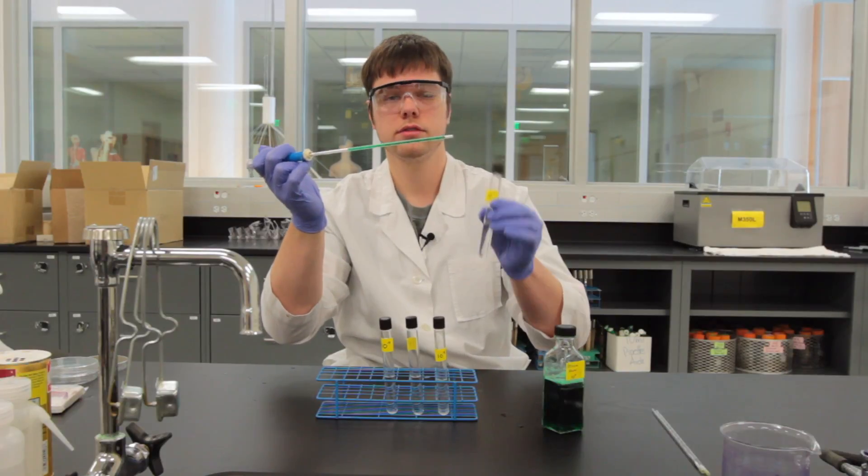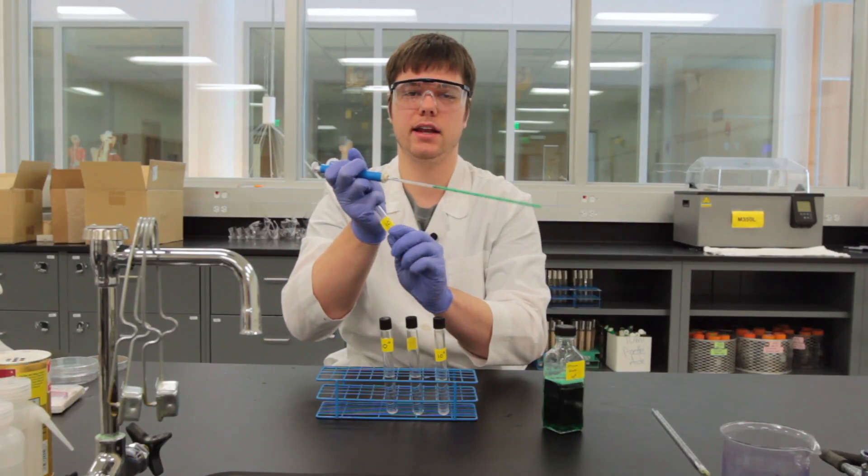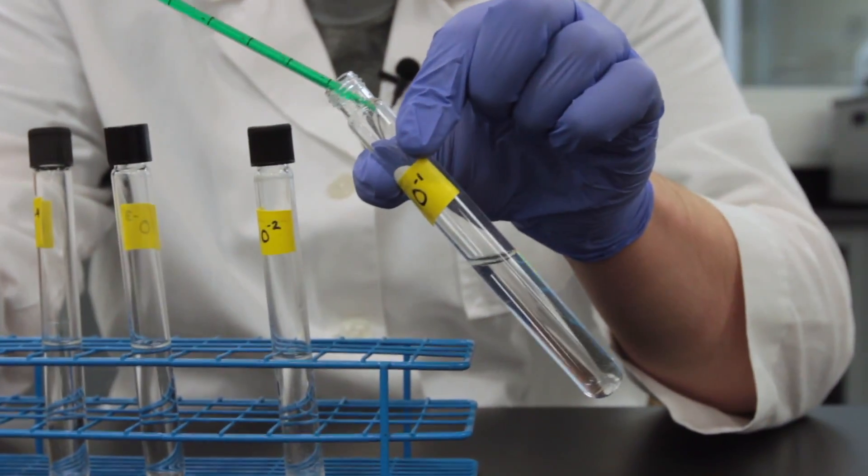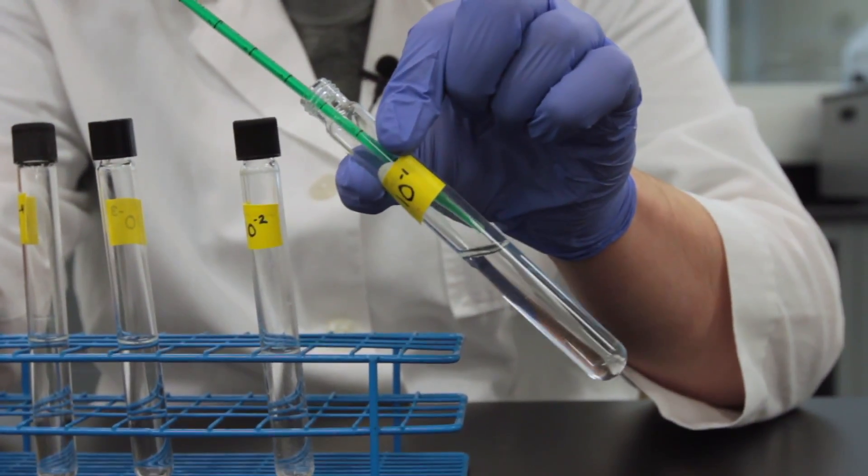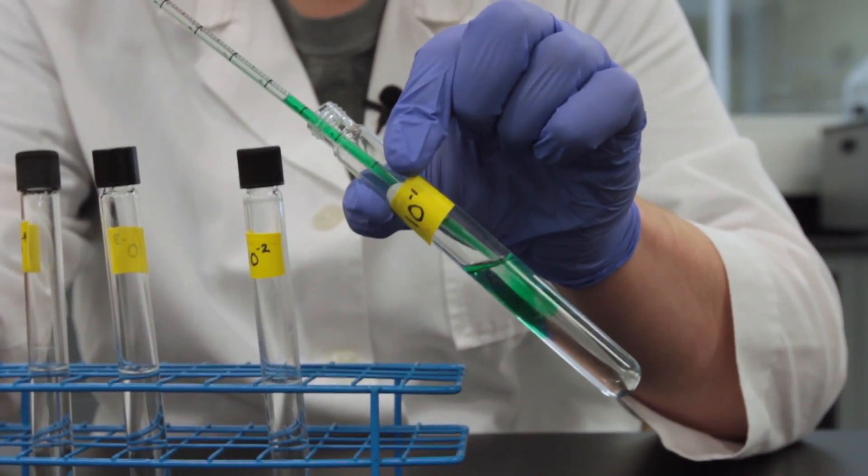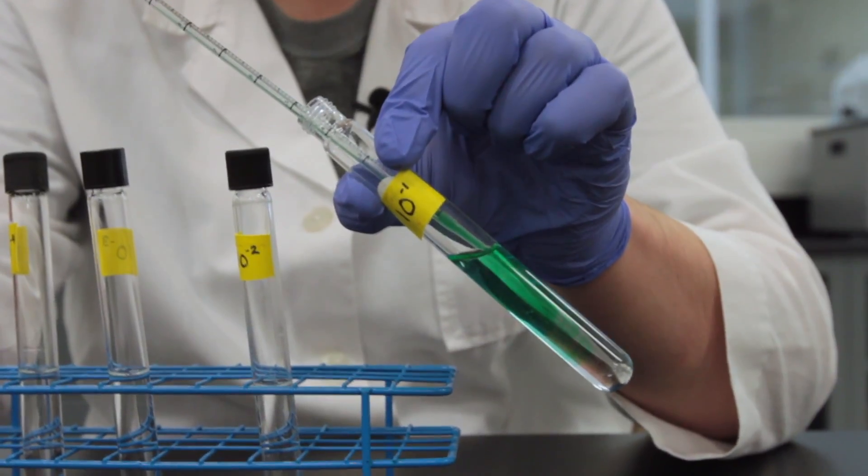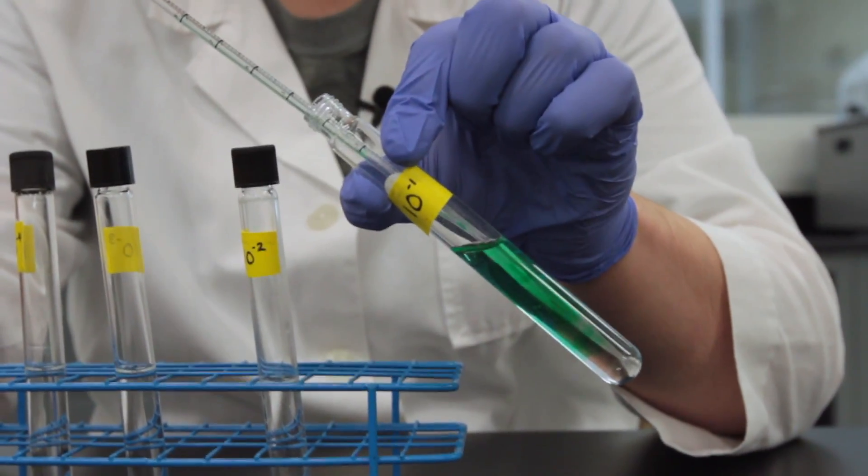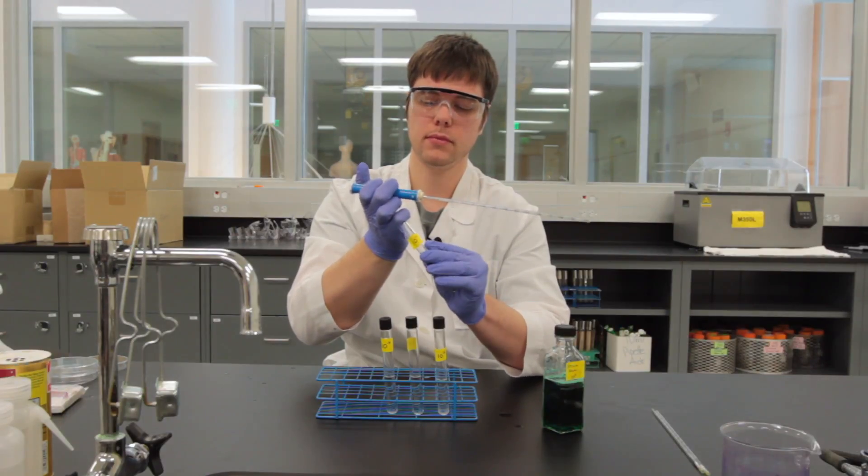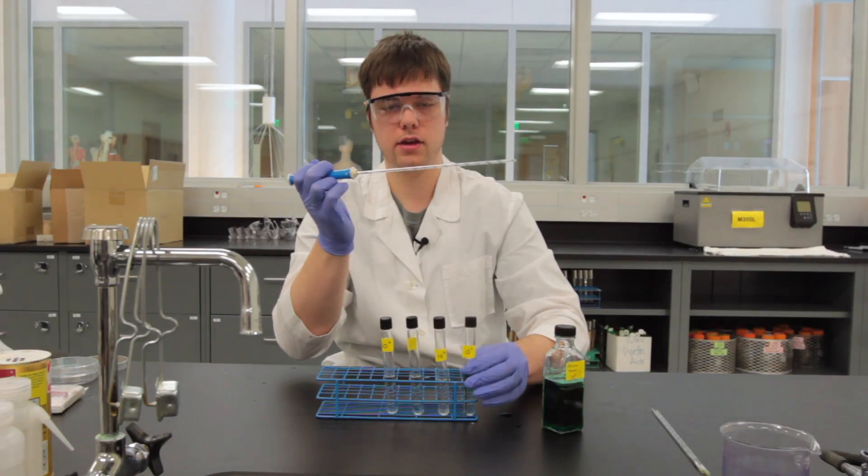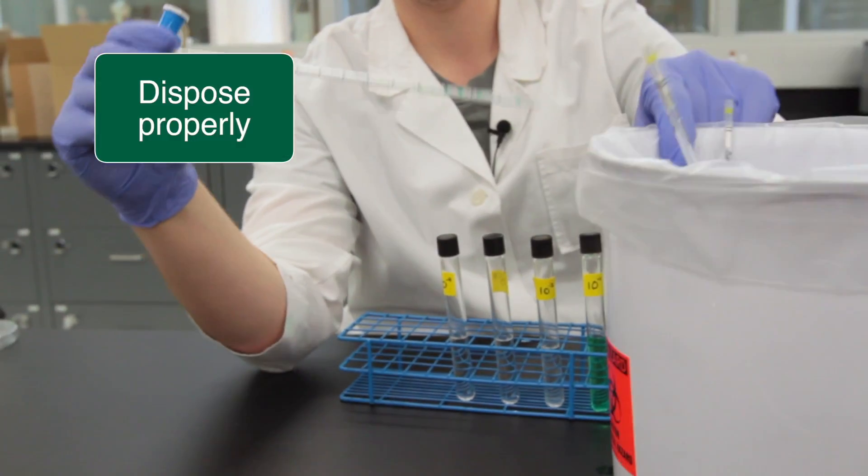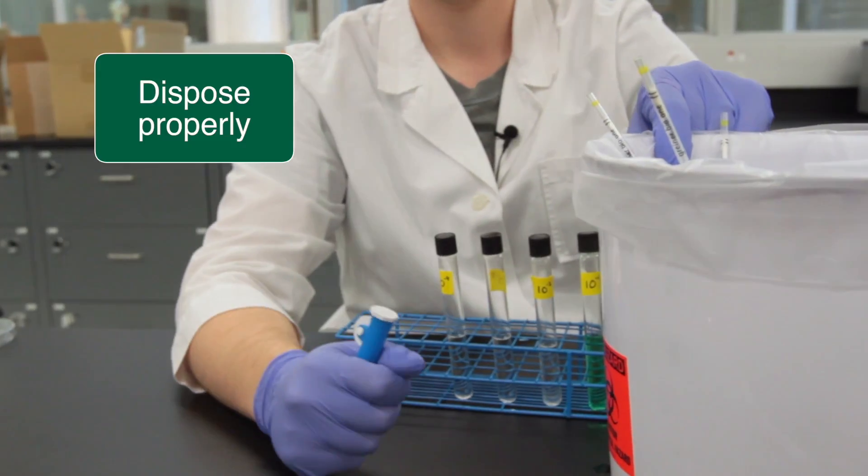We'll then open up our test tube that's labeled 10 to the negative 1, and dispensing by either rolling down or pressing the plunger. As you can see, we're pressing down into the liquid. We'll cap our liquid up very carefully, set that into our test tube rack, never on the counter, and dispose our pipette into our biohazard bin.